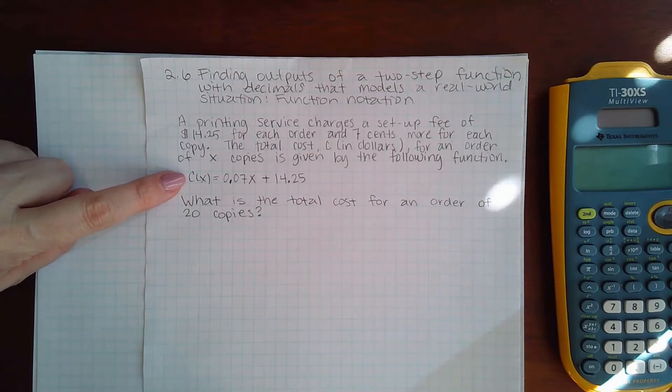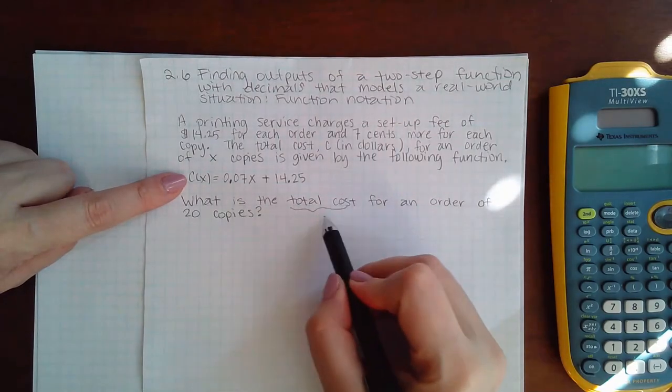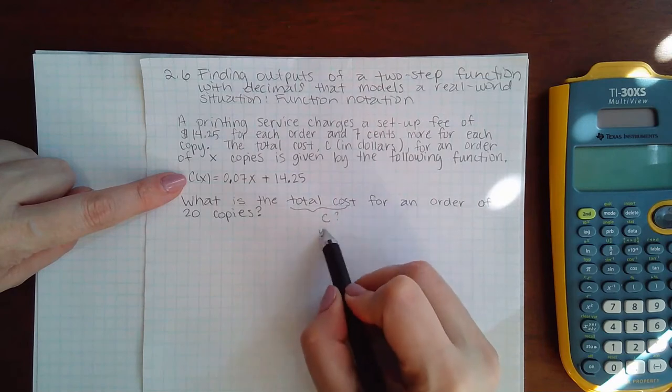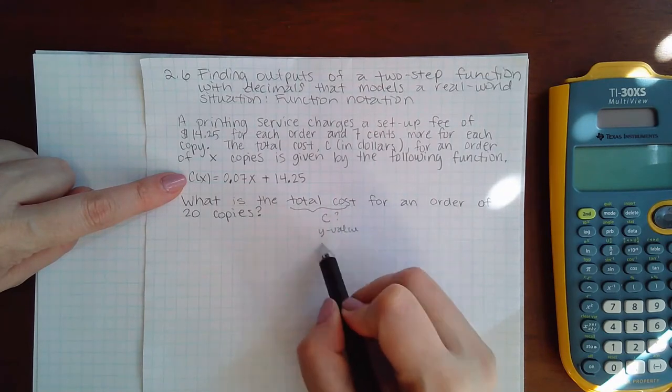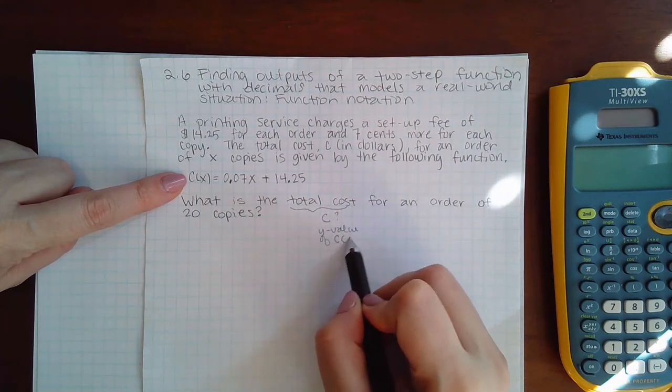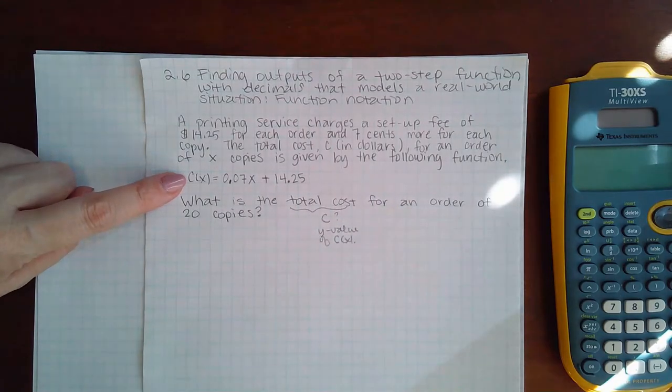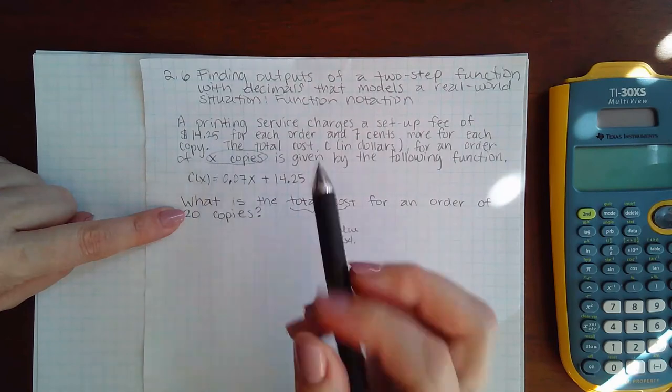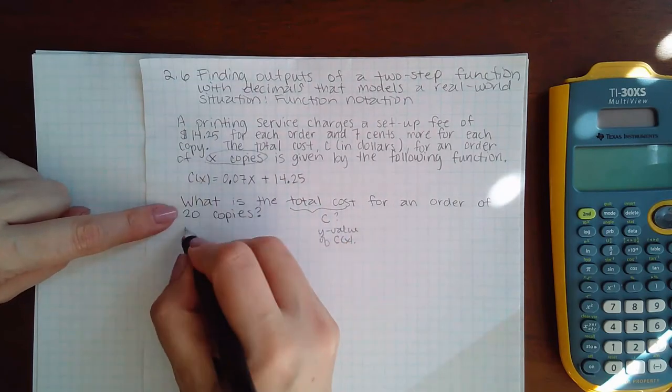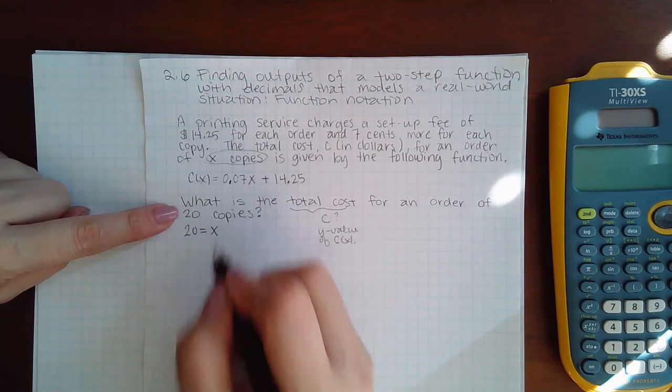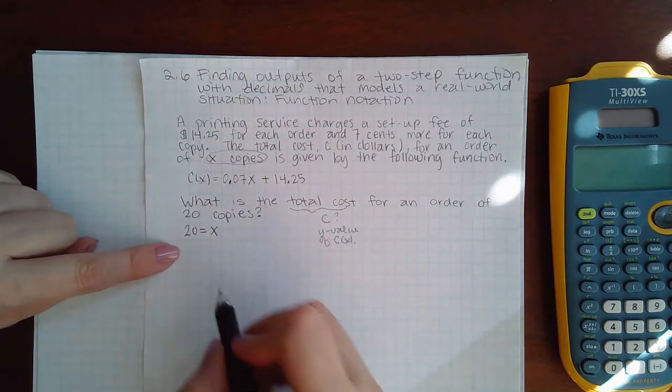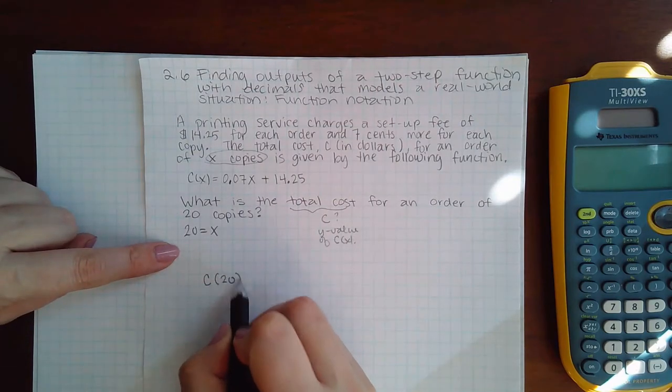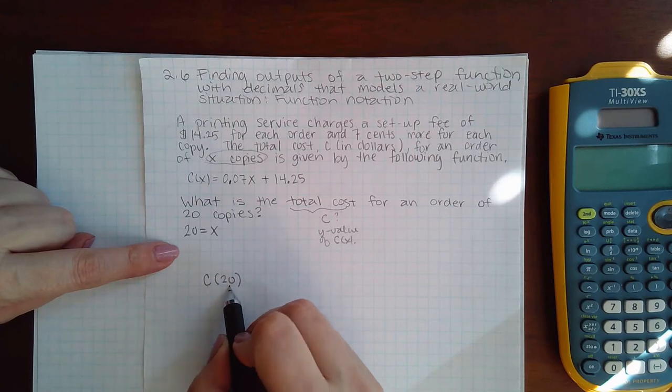What is the total cost? That means they want to know what is C, or the Y value of C of X, for an order of 20 copies. Remember, X equals the number of copies, so this 20 is equal to an X value. Specifically, they're asking me for C of 20, the cost of 20 copies.